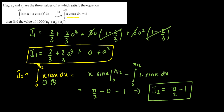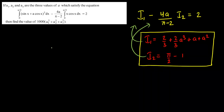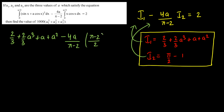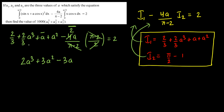Now substituting I1 and I2 into the original equation: (2/3 + (2/3)a³ + a + a²) − (4a/π)·(π/2 − 1)·(2/(π−2)) = 2. The term with I2: −(4a/π) times (π−2)/2 simplifies, with (π−2) canceling, leaving −2a. Taking LCM and simplifying gives the cubic: 2a³ + 3a² − 3a + 2 − 6 = 0, i.e., 2a³ + 3a² − 3a − 4 = 0.